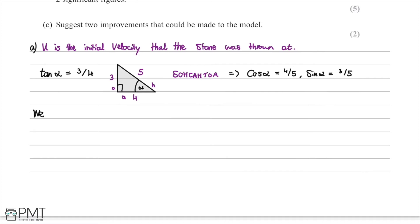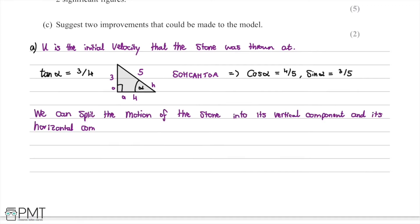We split the motion into its vertical component and horizontal component. By looking at both components, we can find the initial velocity u. We solve the horizontal component for t, which gives an expression in terms of u. We then substitute this expression for t into the vertical component equation and rearrange to find u.